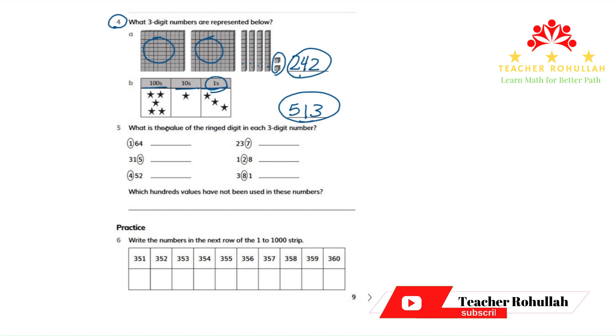In question number five it says, what is the value of the ringed digit in each three digit number? These are the ringed digits. They are ringed.